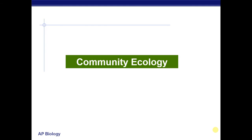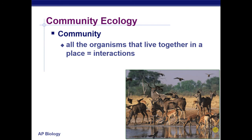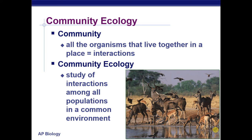And then we'll have some time next Tuesday to review as well. Community ecology is the study of interactions of a community, and that includes all the living organisms that live together in the same place. Since we've already talked a lot about population ecology — the interactions of organisms that are members of the same species — when we put all the different populations together in a common environment, we get a community.